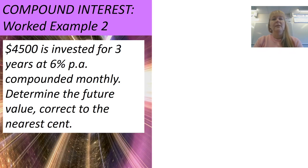Let's look at another worked example. This is worked example two, also from the same textbook. $4,500 is invested for three years at 6% per annum, compounded monthly. As soon as I see the compounded monthly, I know I'm going to have to convert my interest rate to a monthly interest rate, and I know I'm going to have to convert my n, my period, into the number of compounding periods, which would be three years multiplied by 12 months in a year. I'm also trying to find the future value, so I know I'm going to be looking to find A.